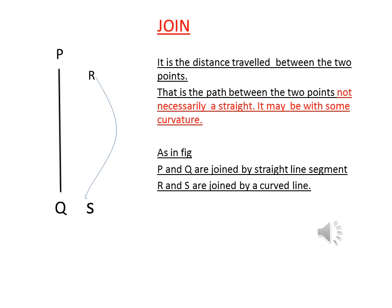Now we have another important term called a join. If we consider two points on a plane or in a space, the distance traveled between them is called a join — it is simply the path that connects the two points. For example, if you consider two towns A and B and you want to go from town A to town B, you can choose any path available, and that path may be straight or curved. In both cases, the path is the join that connects the two points.